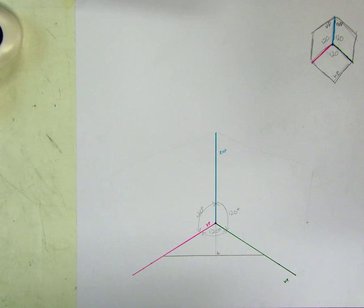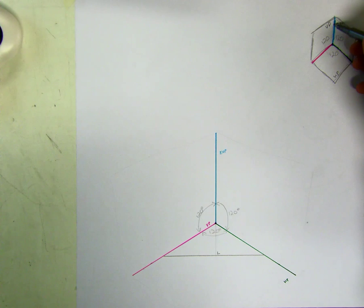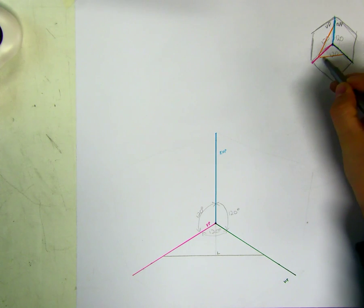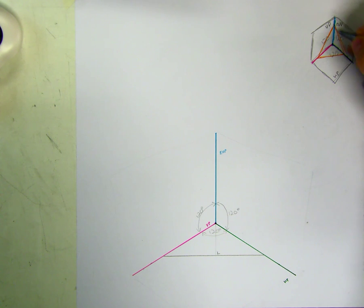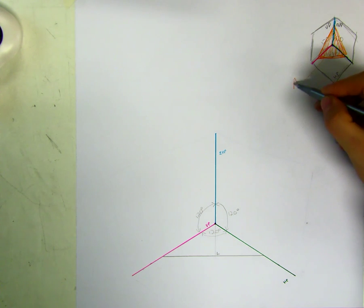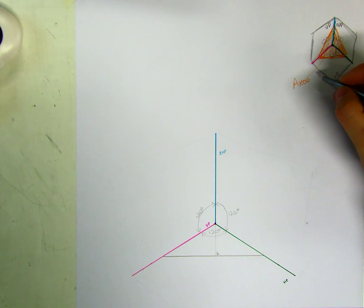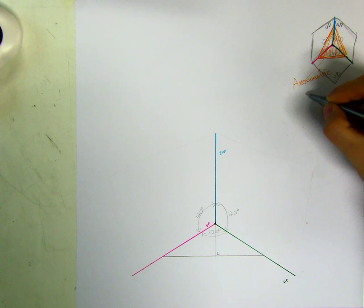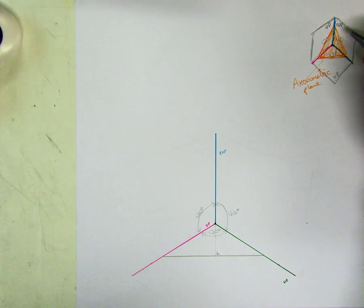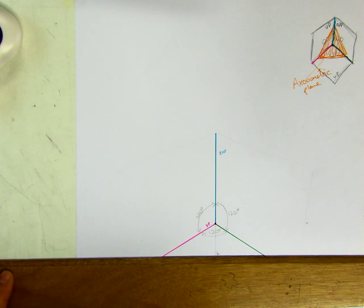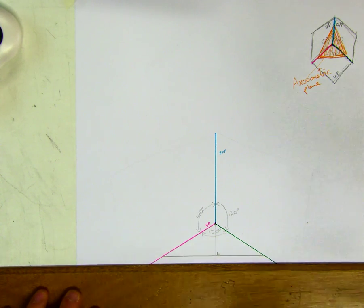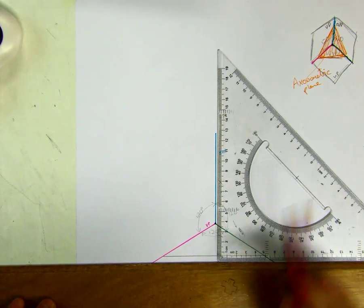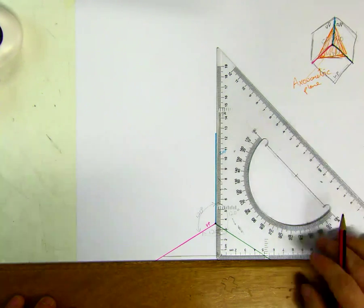We're going to take our axonometric plane and stick it in here. Because it's isometric, we're going to end up with an equilateral triangle — so all sides are going to be equal. The first thing we need to do is, if your page is set up properly, the bottom edge is going to be horizontal. But more importantly, it has to be perpendicular. The bottom edge here has to be perpendicular with this line of intersection, so we bring it down and make sure it's perpendicular.